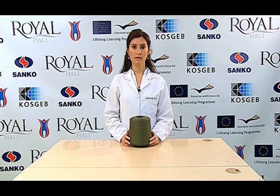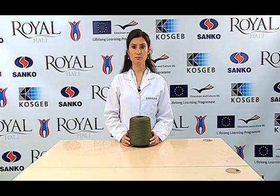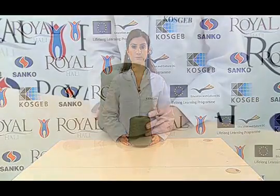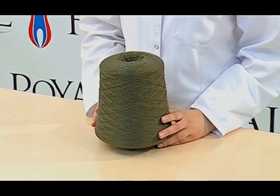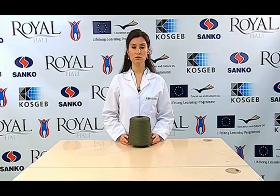The twist can be given in right or left direction. The yarn should be twisted in order to strengthen it. The yarn's strength is directly proportional to the amount of twists. However, this proportion is not constant. More twisting after a critical point reduces the yarn's strength. Therefore, the twist amount should be in accordance with the yarn's usage.